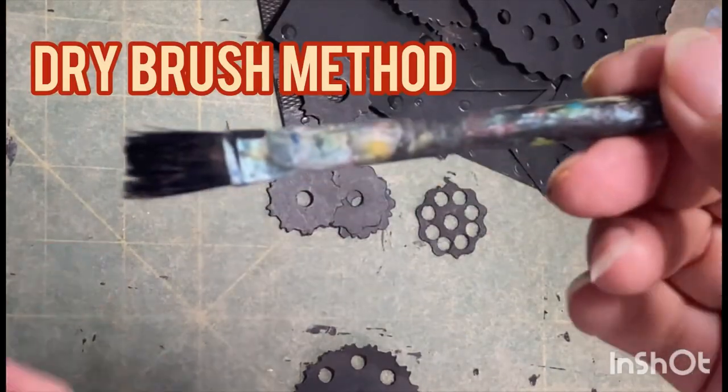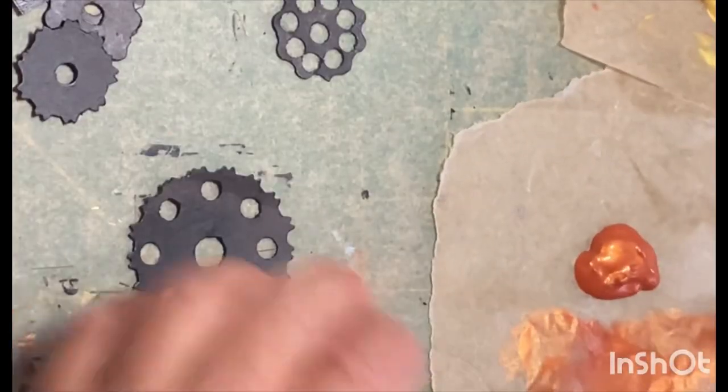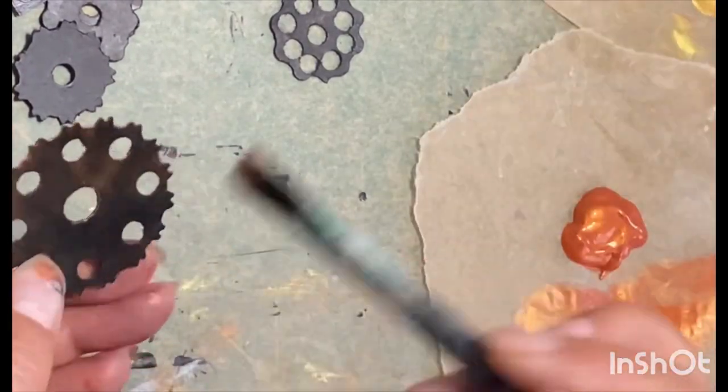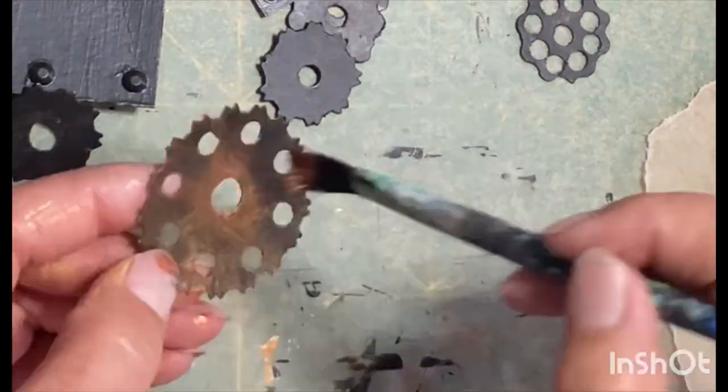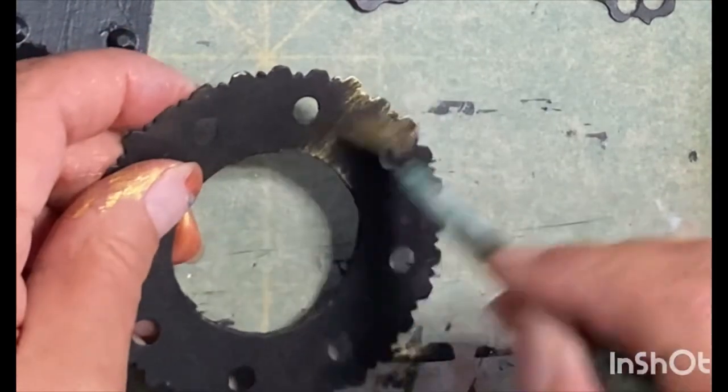Next is a dry brush method. Just take a nice soft dry brush and just take a very small amount of paint and just build up the color until you're happy with the look.